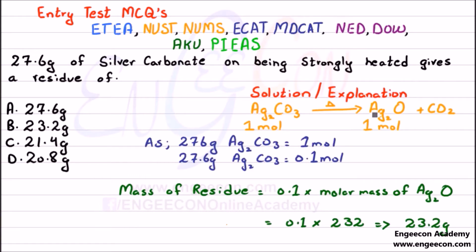First, write a balanced chemical equation for these types of MCQs. From the equation we can see that 1 mole of silver carbonate gives 1 mole of residue. As with simple observation you can solve these questions in seconds. The molecular mass of silver carbonate is 276 grams, which equals 1 mole.